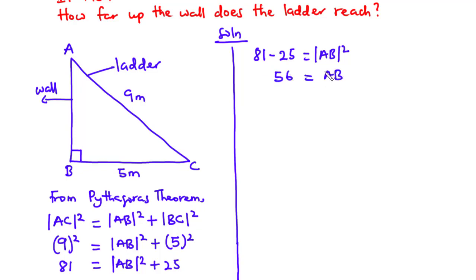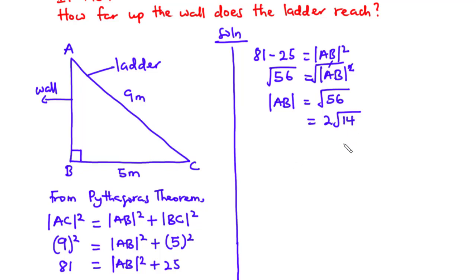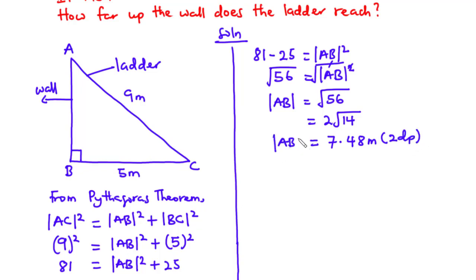So AB² = 56, therefore AB = √56 = 2√14. To two decimal places, that is equal to 7.48 meters. So the ladder reaches the 7.48 meters mark on the wall — the height AB is 7.48 meters. That's it for today's video, thanks for watching and see you in my next video, bye-bye.